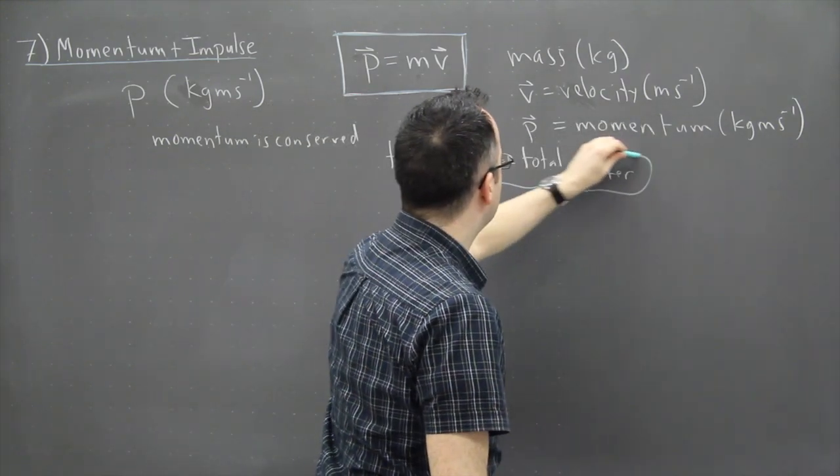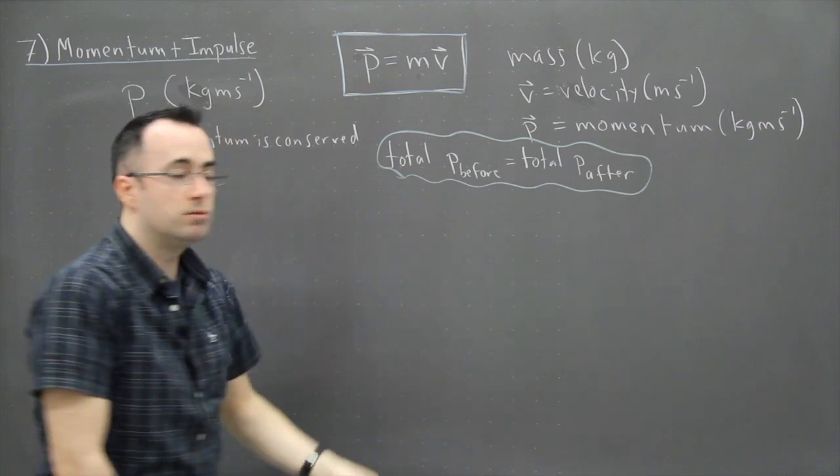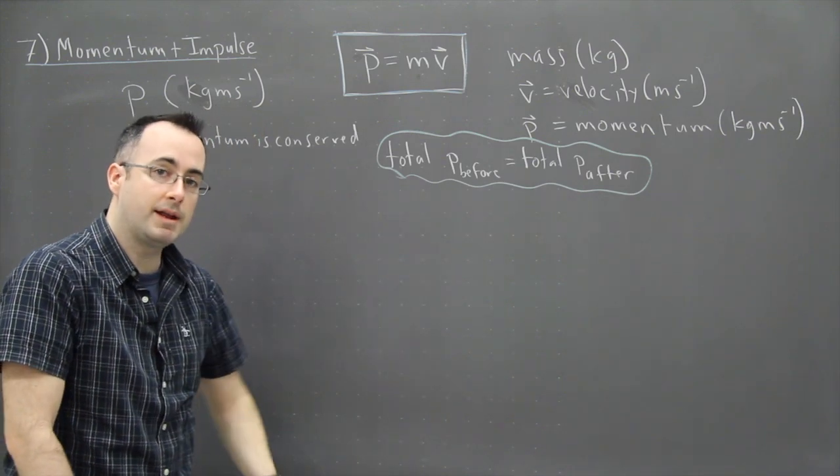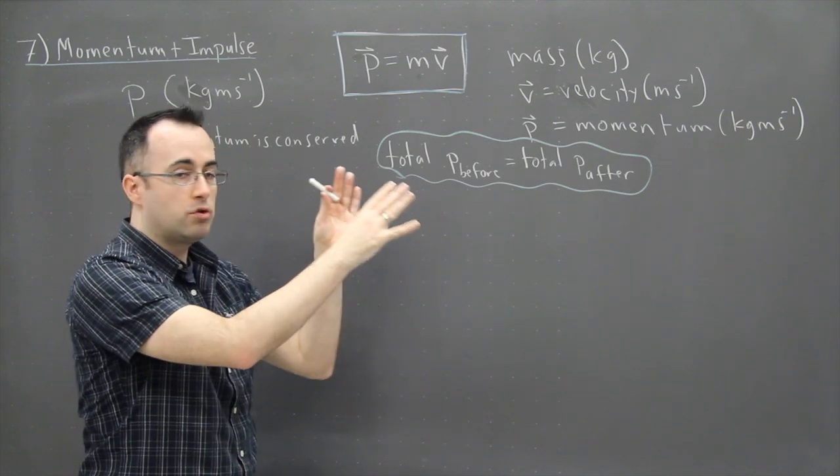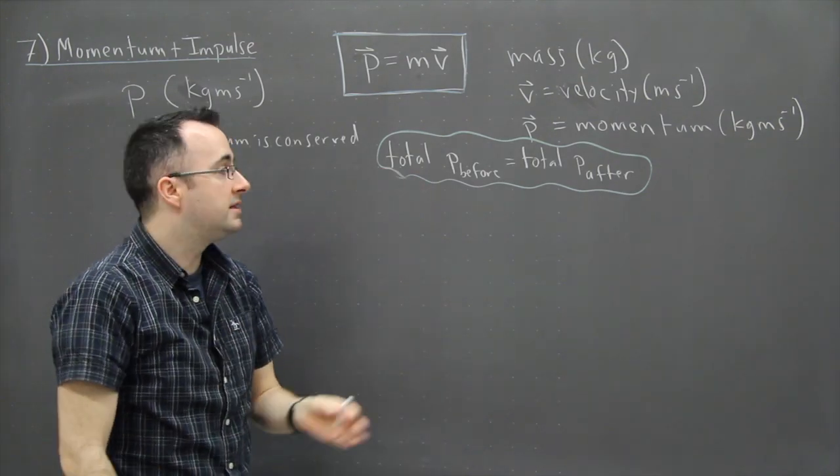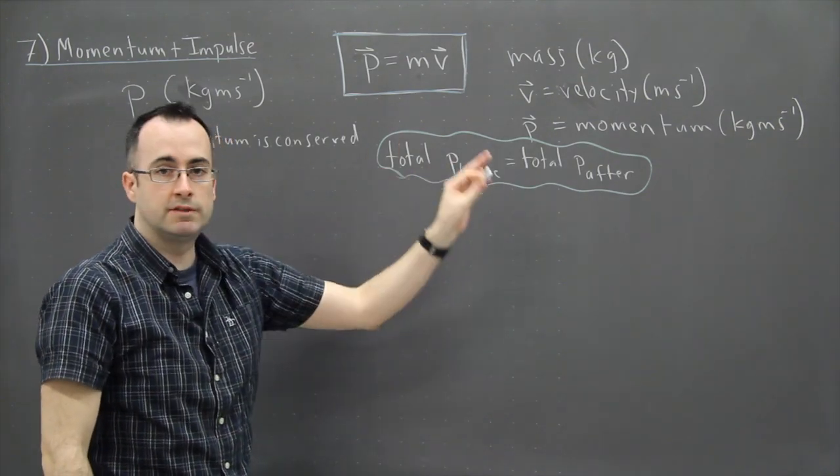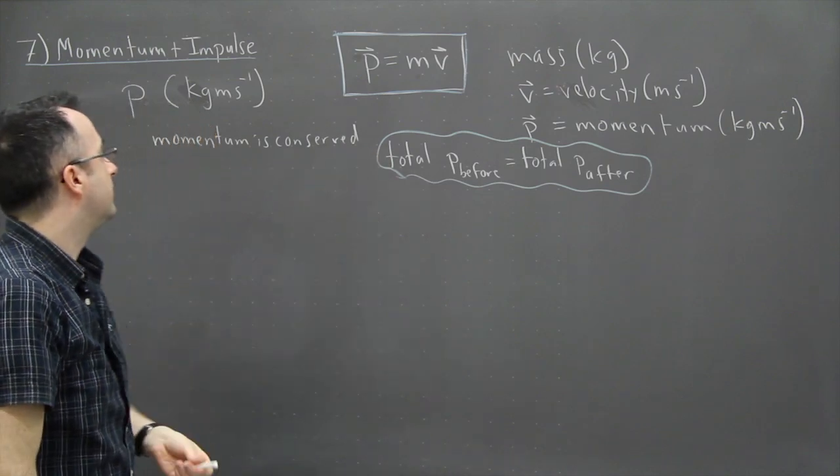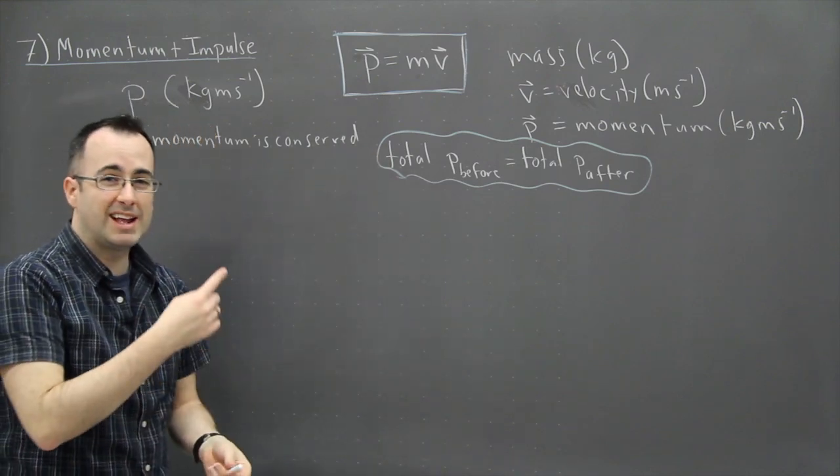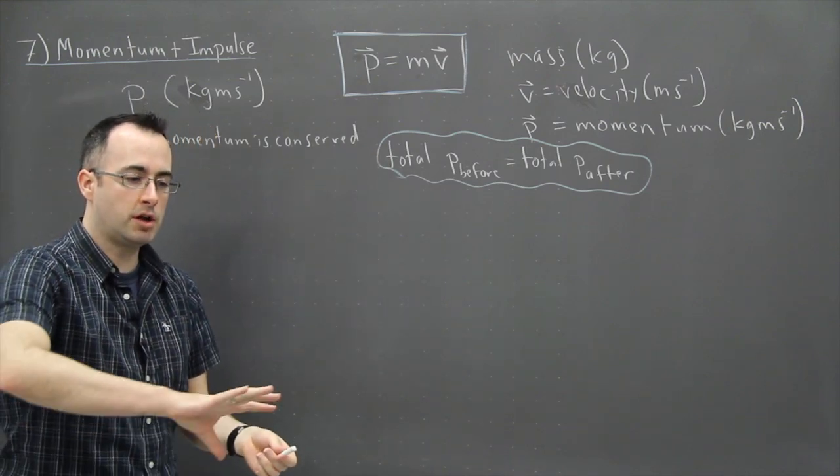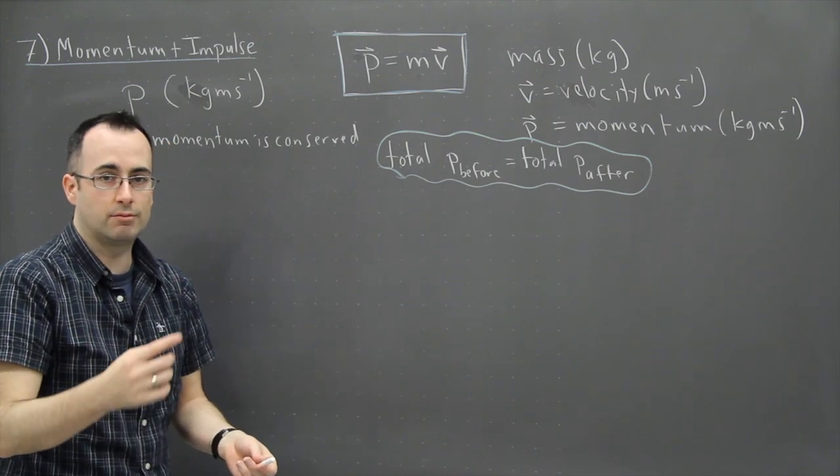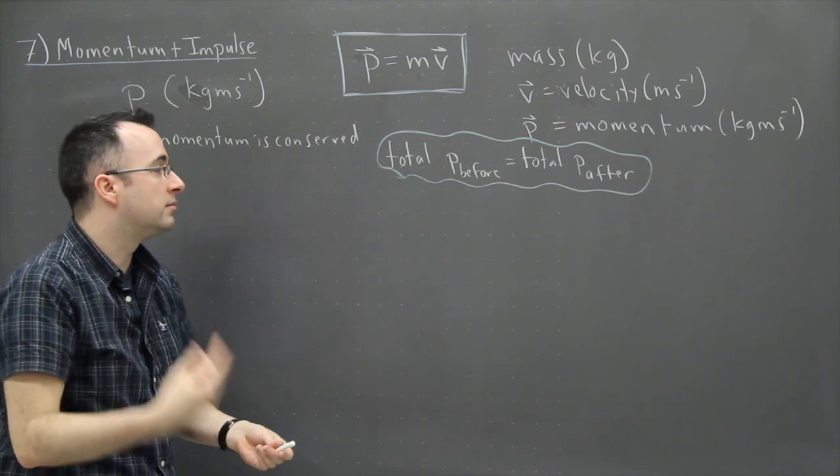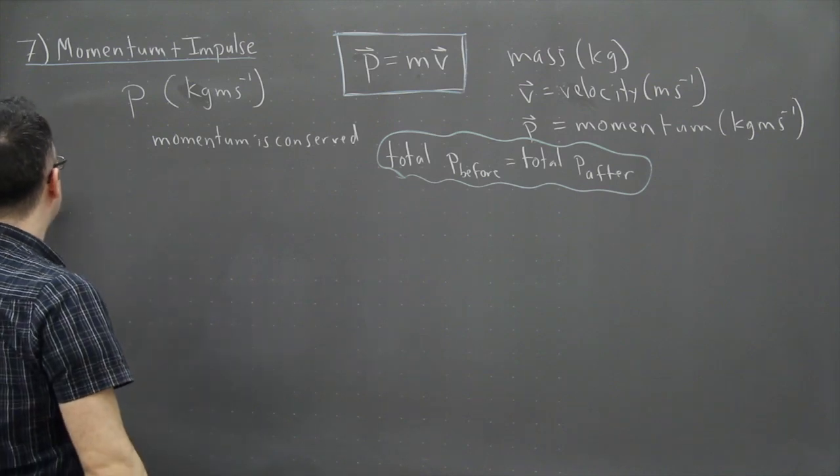So this right here is really important. This is actually what I almost always end up using, is that the total momentum of a system beforehand is equal to the total momentum after. And this is actually what's useful with momentum conservation. Here we're actually looking at linear momentum because we're not considering things in a circle. We call that rotational or angular momentum. But in this case, I'm just going to give an example.